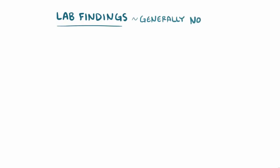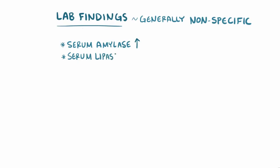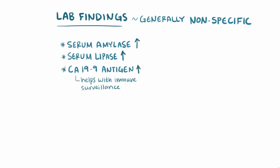Laboratory findings are generally nonspecific for pancreatic carcinoma. Both serum amylase and serum lipase levels might be elevated, as well as tumor markers CA-19-9 antigen — a molecule that helps with immune surveillance — and CEA, a glycoprotein involved in cell adhesion. The activation of oncogenes and tumor suppressor genes can disrupt their production so that elevated levels appear in the bloodstream.